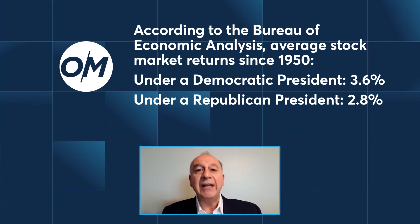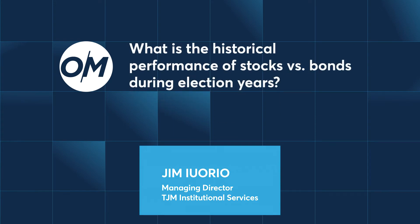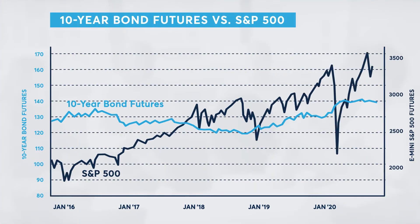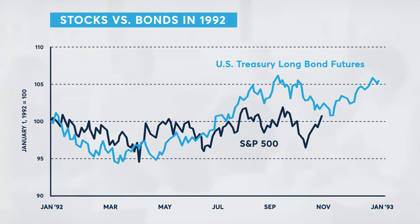Let's talk about stocks versus bonds during election years. In the last month or so in interest rate futures, we've seen massive steepeners being put on — potentially the era of good times ahead. Is there any historical reference between stocks and bonds? I think it really depends on the election. Coming back to 1992 or 1996, there were fairly ho-hum returns afterwards because the election result was as expected.